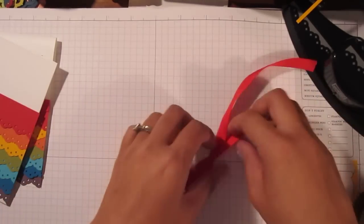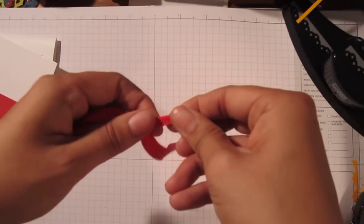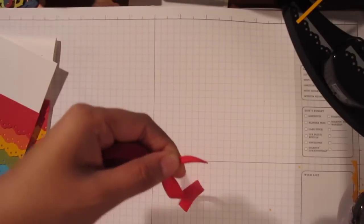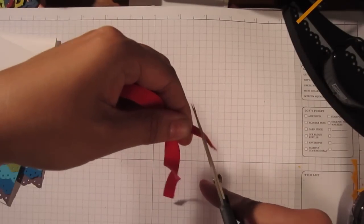So next you're going to just, you can either cut them at a diagonal. I like to make mine, my sons call them snake tongues, but I like to cut mine as a banner.